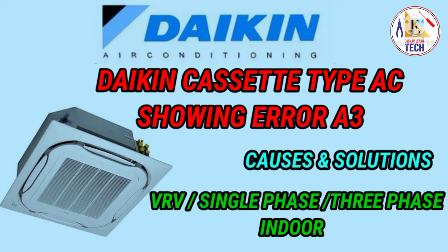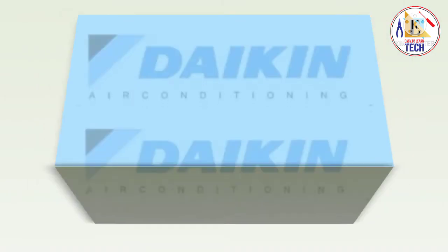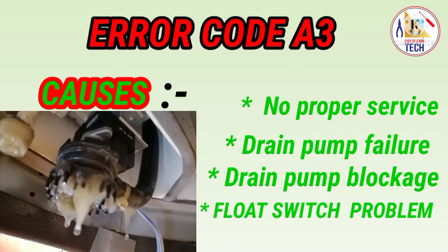This error code can occur in VRV single phase or three phase cassette type indoor units. You can check this video and solve the issue for error A3. For all other air conditioning error codes and proper solutions, you can check the link in the description. Without wasting time, let's start and see what are the causes of error A3 and how you can fix it.